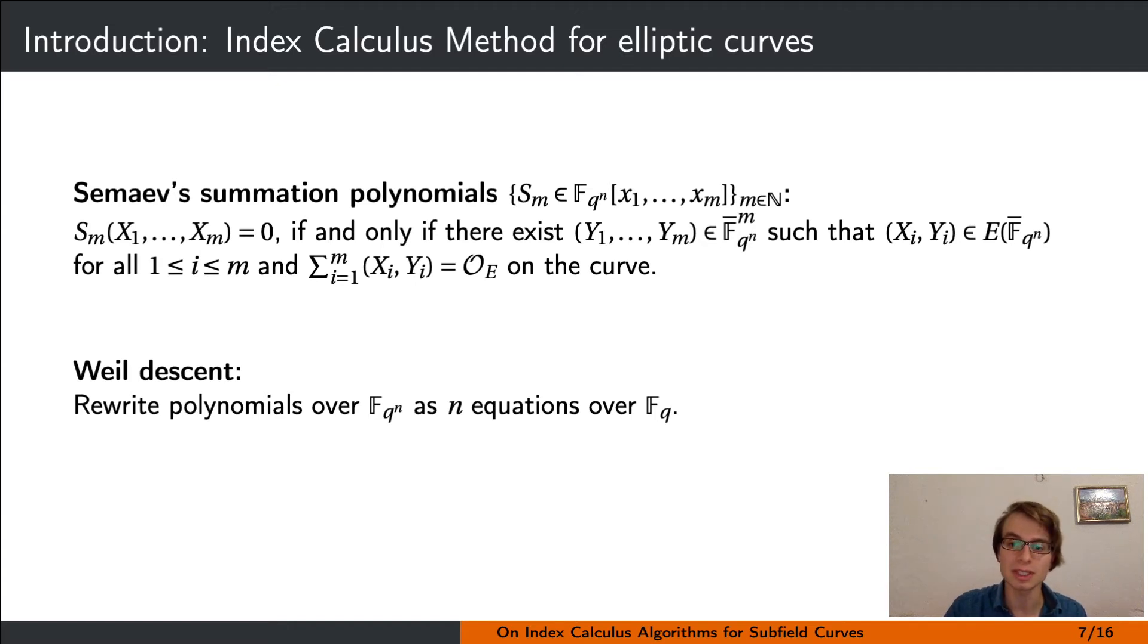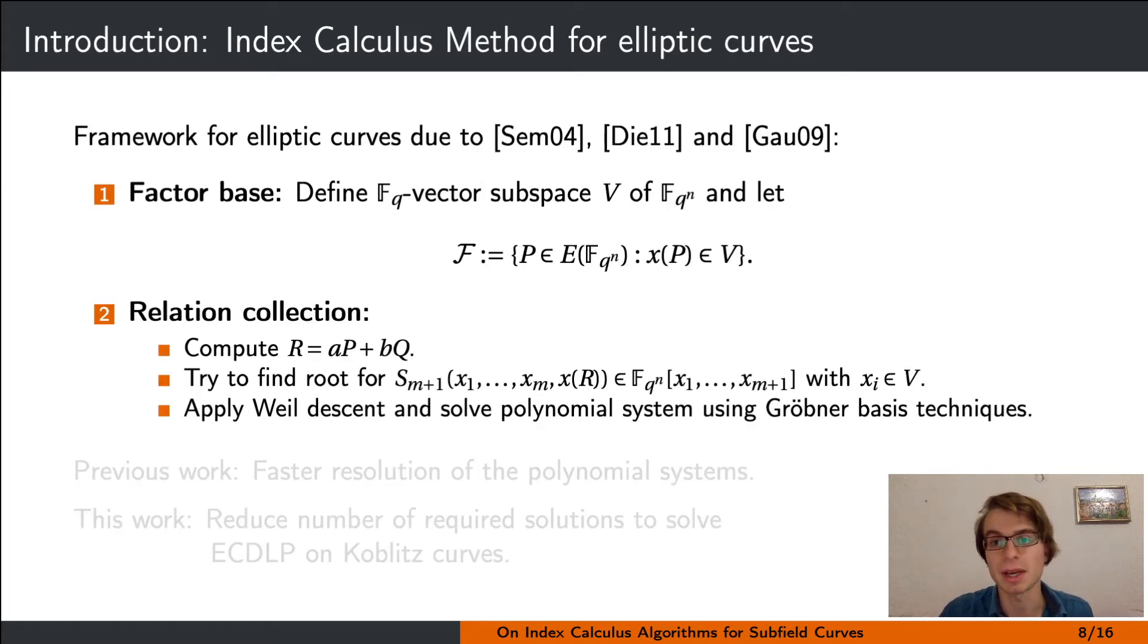The other ingredient for index calculus on elliptic curves is the so-called Weil descent. It refers to the fact that we can write polynomials over a field extension Fq^n as n equations over the subfield Fq.